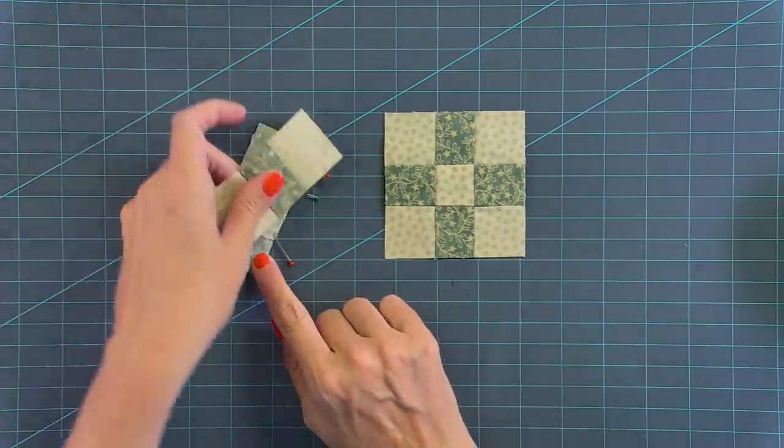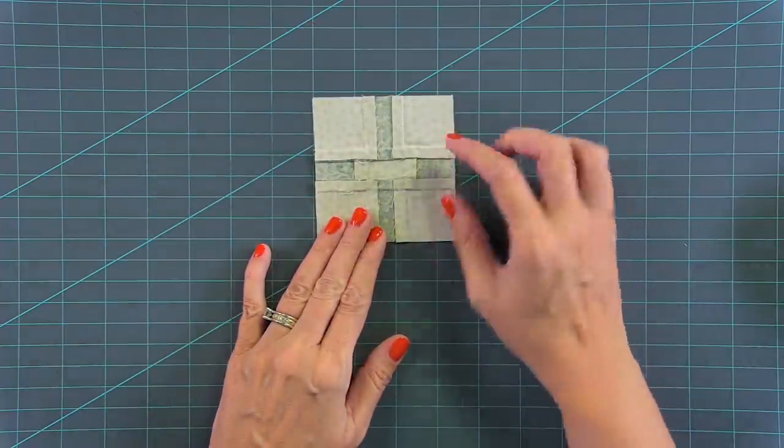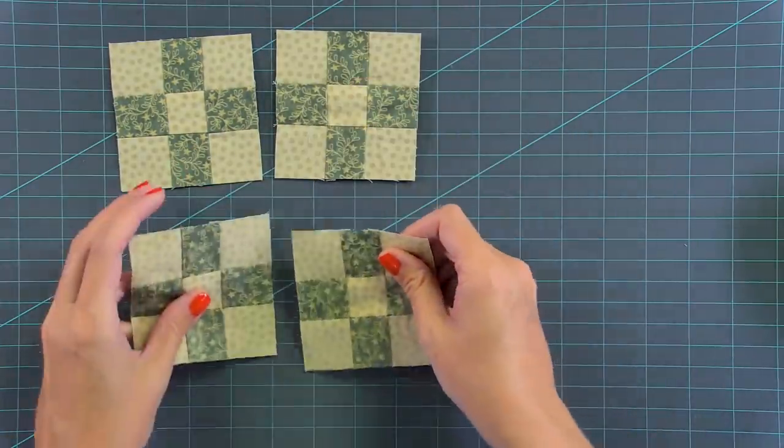You'll stitch with a quarter inch seam, add both top and bottom, and you're going to press towards the inside. And for this block, you're going to make four nine patches.